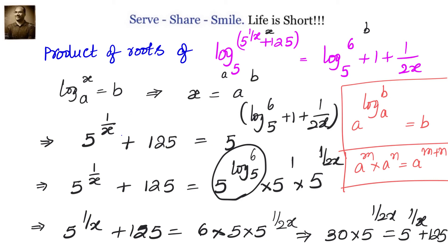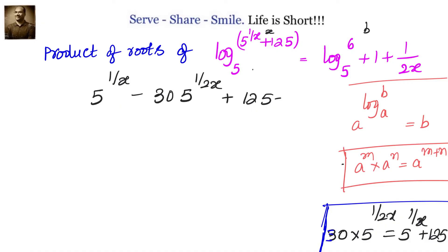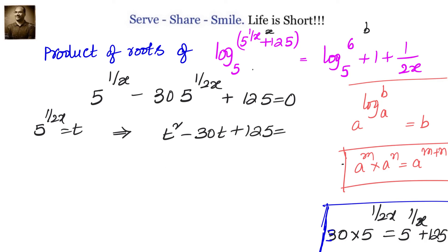We got a quadratic equation. We have 5 to the power of 1/x minus 30 times 5 to the power of 1/2x plus 125 equals zero. Now consider 5 to the power of 1/2x equals t. Then what we have is t squared minus 30t plus 125 equals zero.